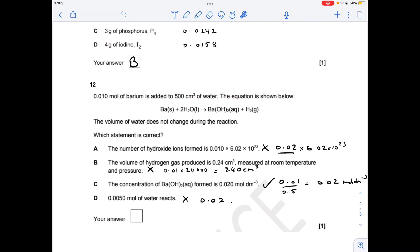The concentration of barium hydroxide formed is 0.02 moles per decimeters cubed. Well, is that correct? Well, the moles of barium hydroxide produced is 0.01 over the volume in decimeters cubed does indeed give the answer 0.02, so that's the correct one. I may as well explain the last one. 0.005 moles of water reacts. No it doesn't, it's going to be twice 0.01, which is 0.02.